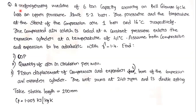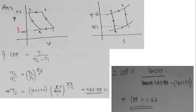A refrigerating machine of 6-ton capacity means 6 tons of refrigeration — one ton is the unit of refrigeration. This machine works on the Bell-Coleman cycle, which is another term for the air refrigeration cycle or reverse Joule cycle. We can straightaway draw the PV diagram and TS diagram of the Bell-Coleman cycle.